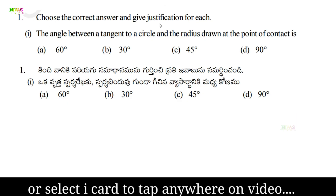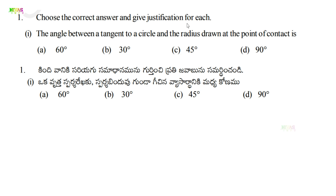Question number one: Choose the correct answer and give justification for each. From the multiple choice options given, we need to select the answer and also provide justification. First one: The angle between a tangent to a circle and the radius drawn at the point of contact is — 60°, 30°, 45°, or 90°?